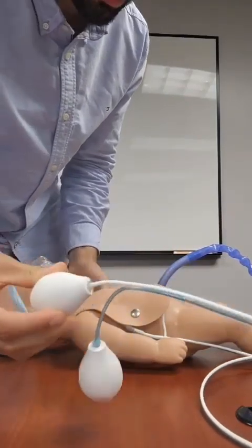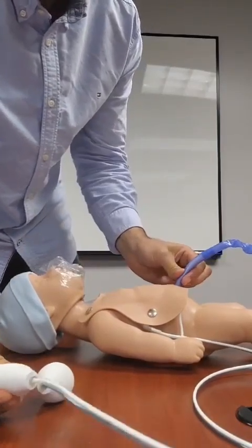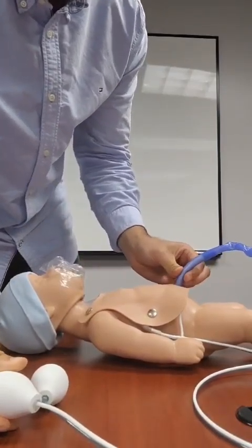So the white tube is used to simulate heartbeat, which you can feel right here, as well as in the umbilical cord pulse.